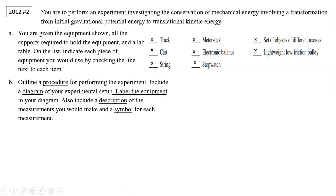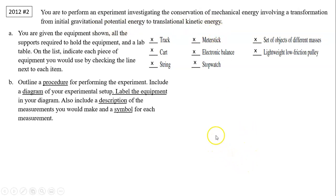There are many ways to do this. Your objective is to confirm if total mechanical energy is conserved. That means you're going to measure total mechanical energy at one point, then measure it at another point to see if they are the same. In this case, they've already told you the initial gravitational potential energy, and you need to measure kinetic energy — those are the things you need to measure.